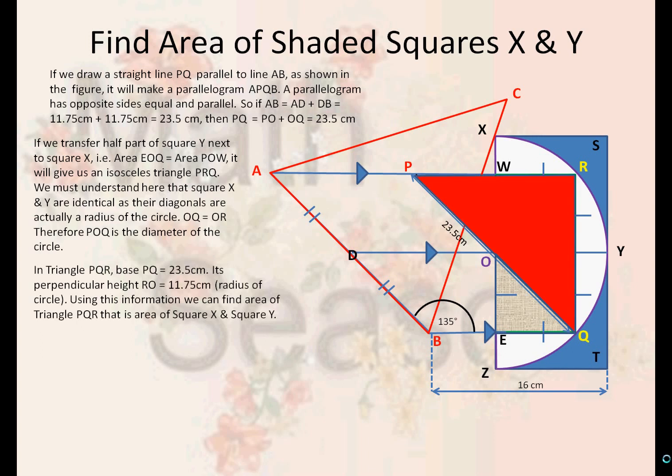In triangle PQR, the base PQ is 23.5 cm, as we found out earlier. Its perpendicular height RO is equal to 11.5 cm, which is the radius of the circle. Using this information, we can find area of triangle PQR that is equivalent to the area of square X and square Y.